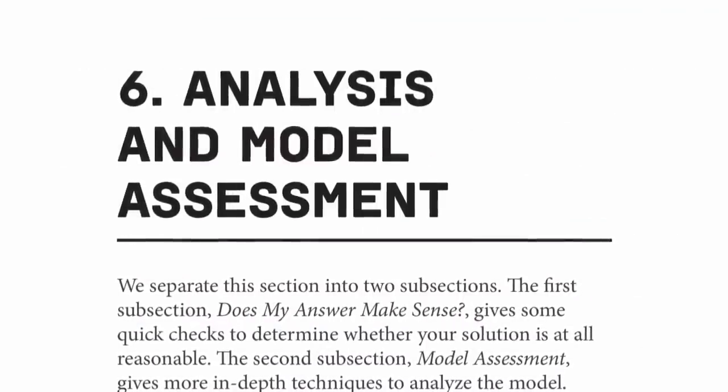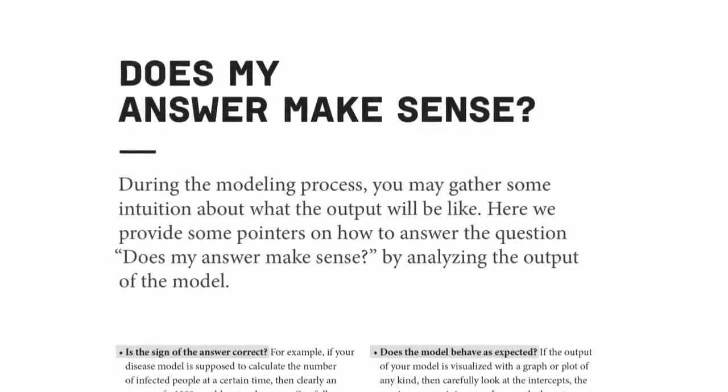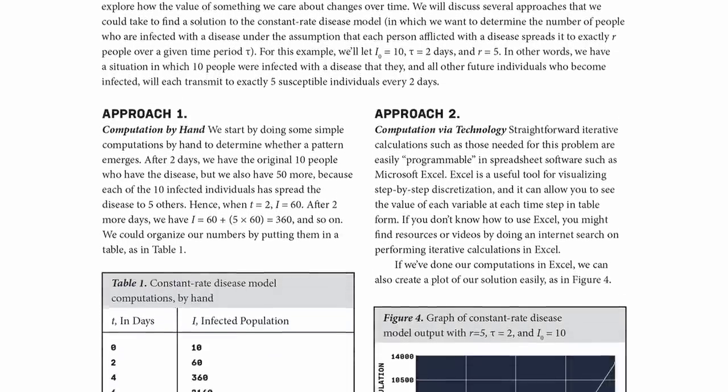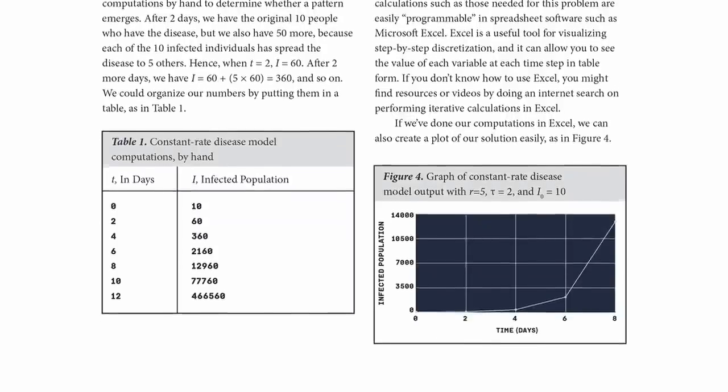A critical step in the modeling process is a systematic evaluation of the output the model generates. Math modeling certainly does not lead you to one answer and one answer alone. There's a big difference between getting an answer and the answer, because math modeling questions are open-ended. For example, with disease modeling, one student may have a very simple model — one person has it, gives it to two people every day, those two give it to two more — that's an answer, but it ignores many realistic components of disease spreading.